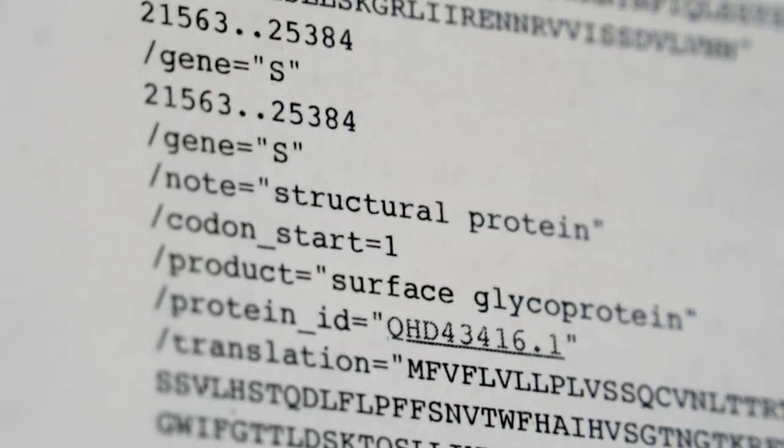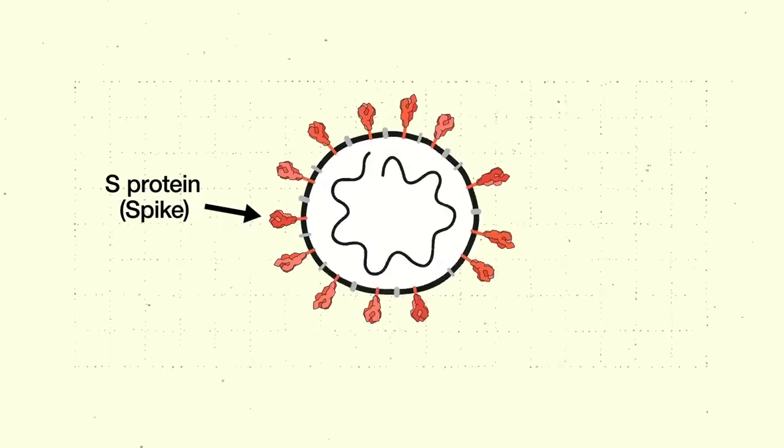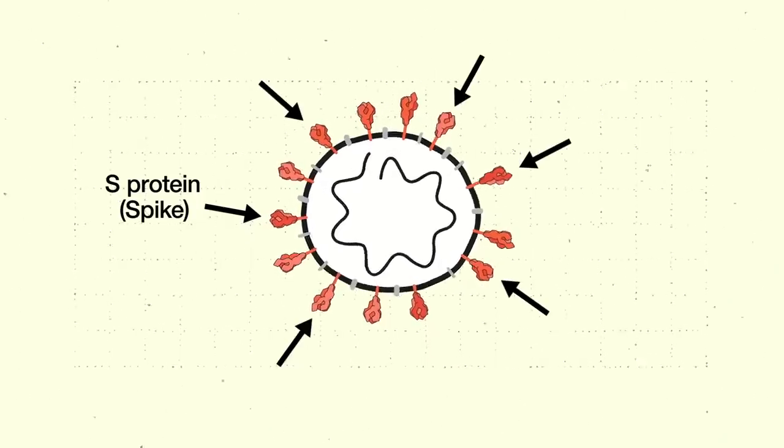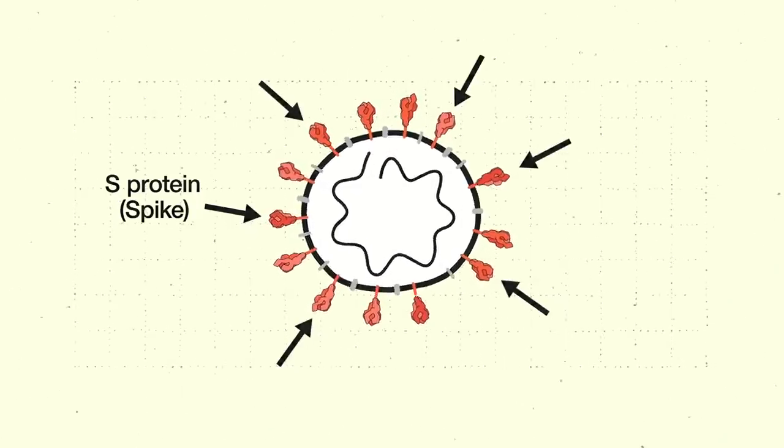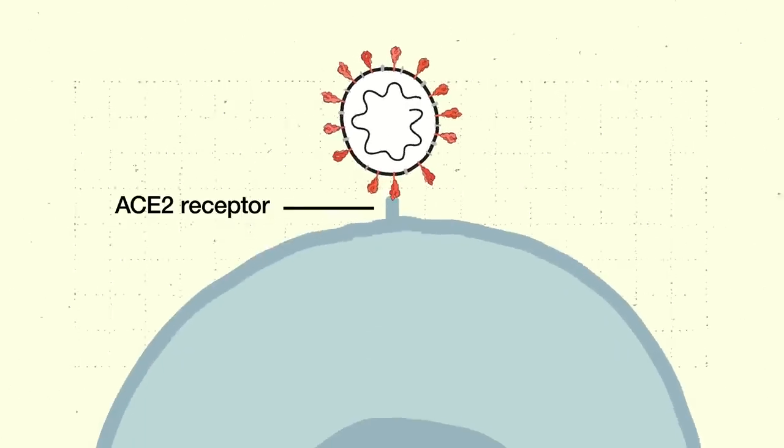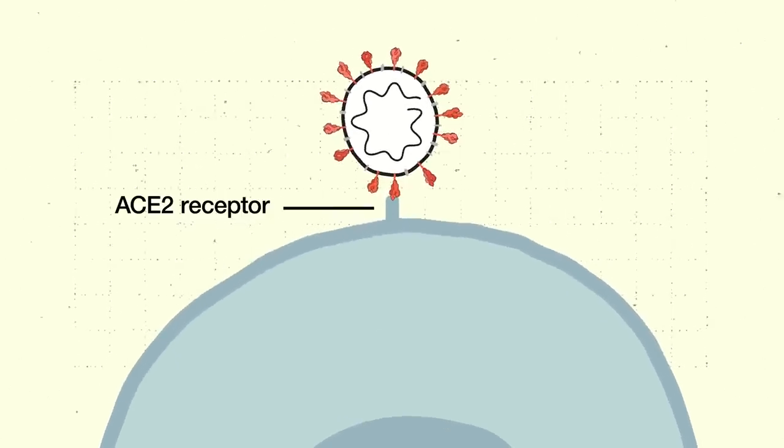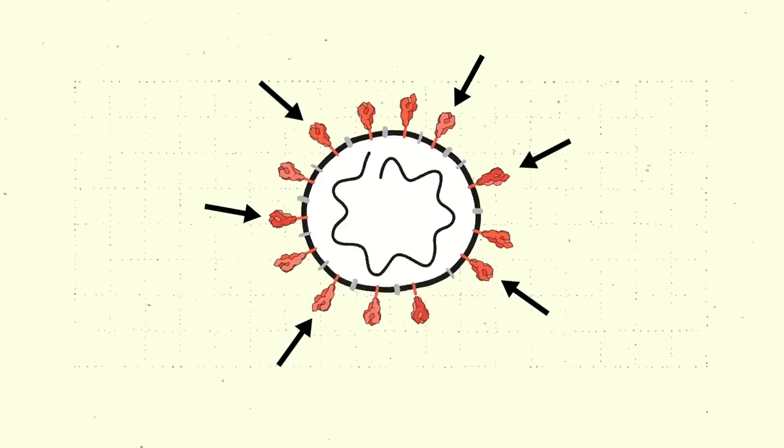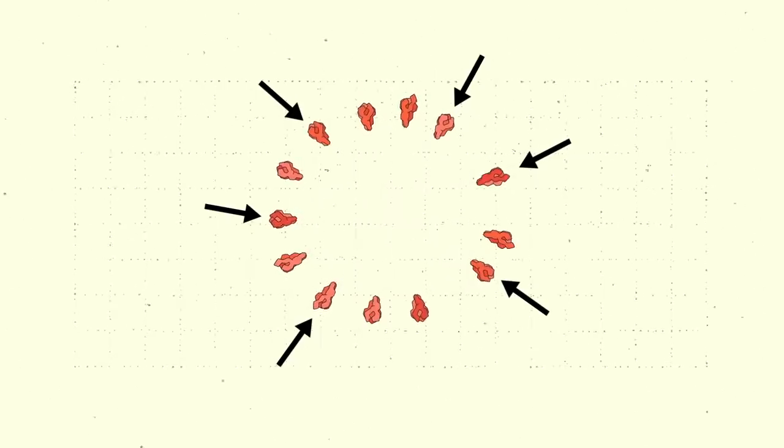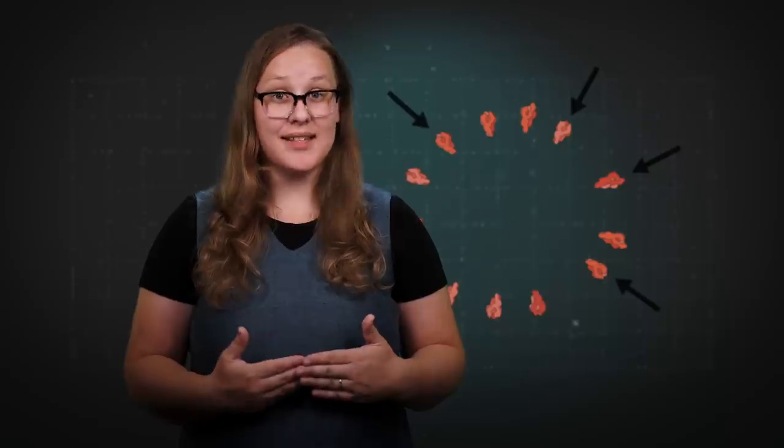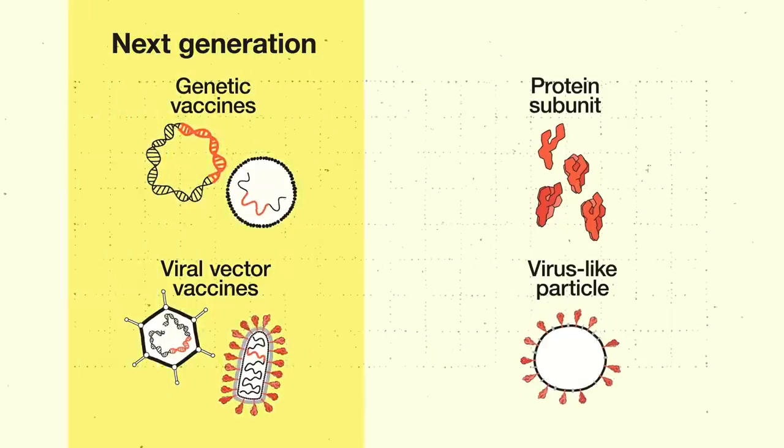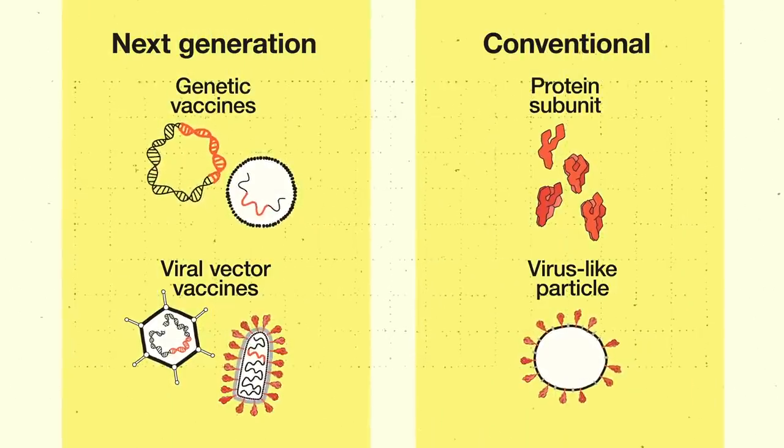Because of previous research into SARS-1 and MERS, researchers knew they could focus initial attention on the S protein, also known as the spike. The spike is the protein that studs the surface of the SARS-CoV-2 virus and is necessary for viral entry into human cells. So a vaccine that exposes the immune system to just the spike should induce a protective immune response, and that's the strategy behind the majority of COVID-19 vaccine candidates.